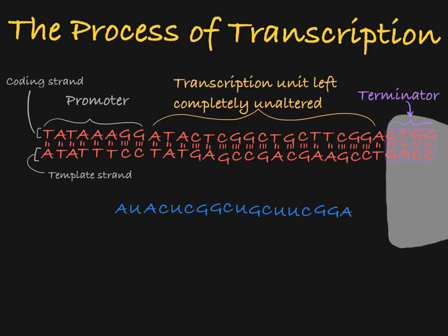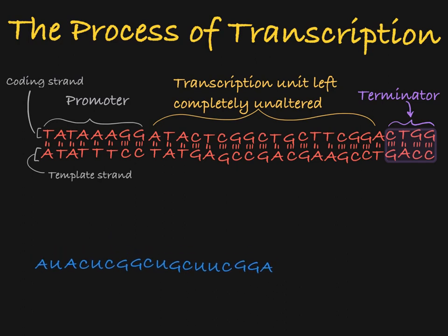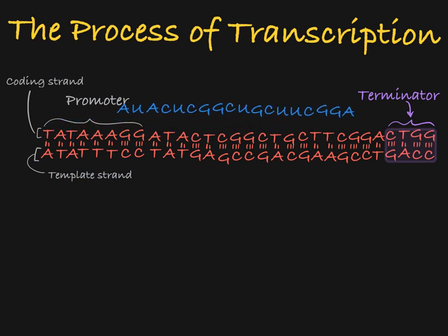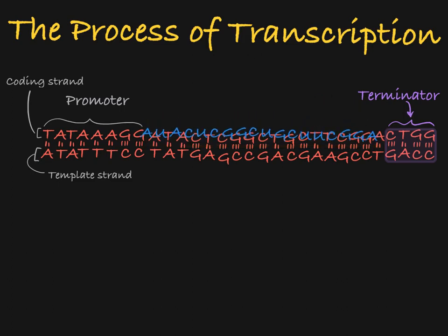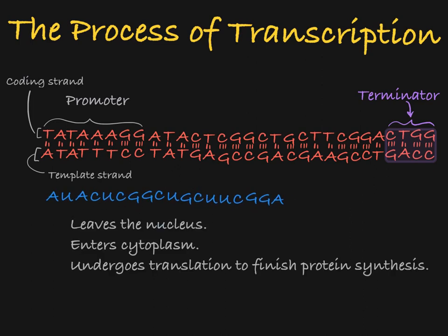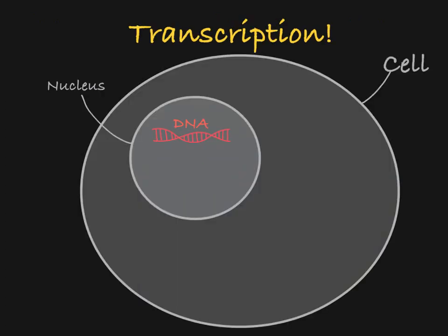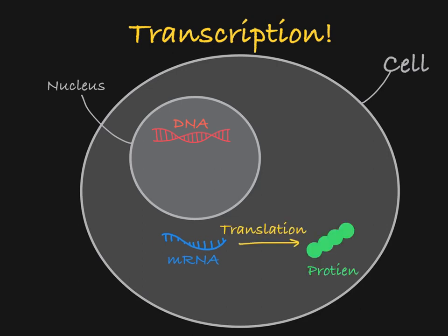Notice that the original DNA strand is left completely unaltered from its original state. At this point, the RNA polymerase has created an mRNA version of the coding strand of the gene, and this mRNA can now leave the nucleus and enter the cytoplasm of the cell, where it will go through the process of translation to build a protein. So that was the process of transcription. Our cells use transcription factors and RNA polymerase to make an mRNA transcript of a gene, which can then be translated into a protein needed to complete a task within the organism.